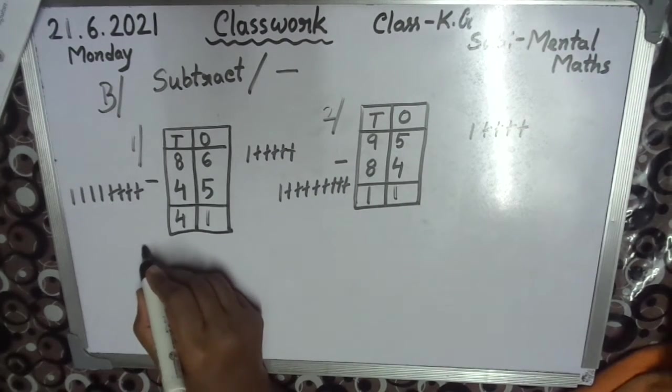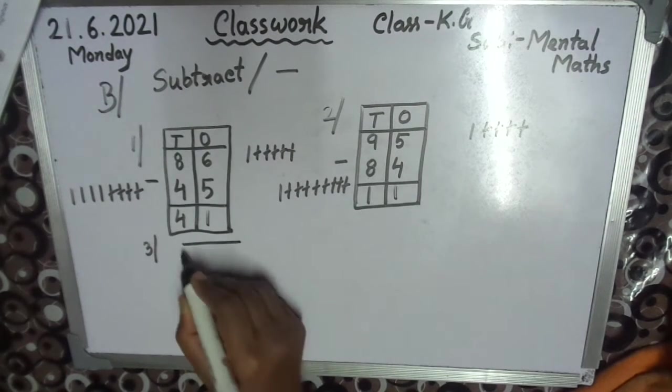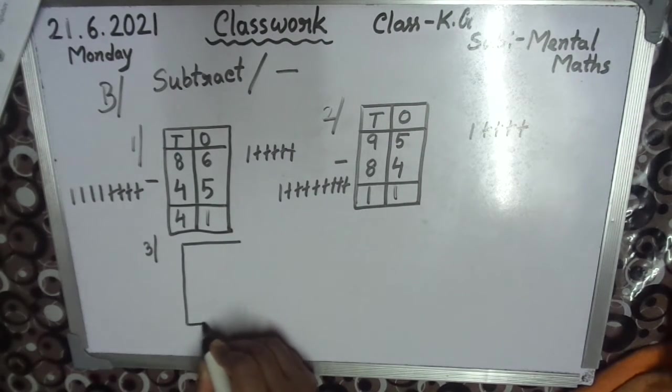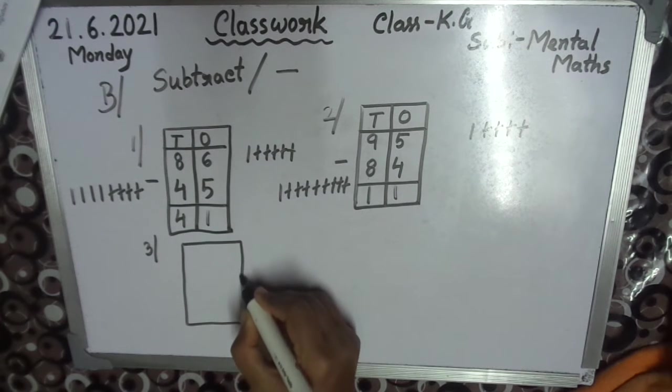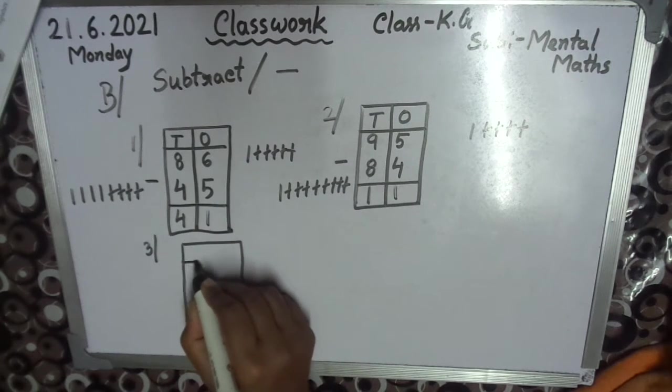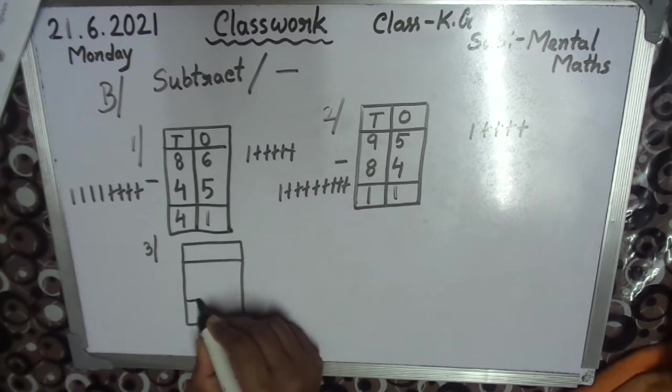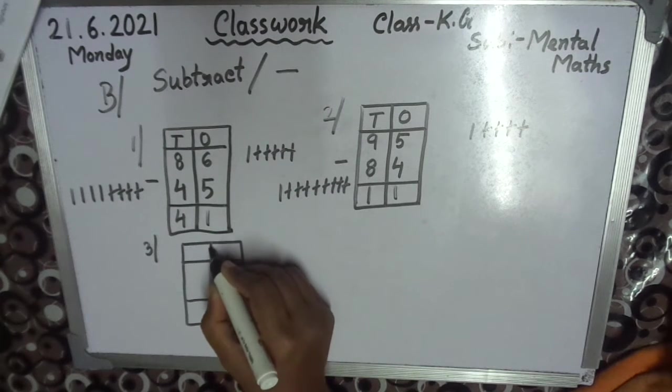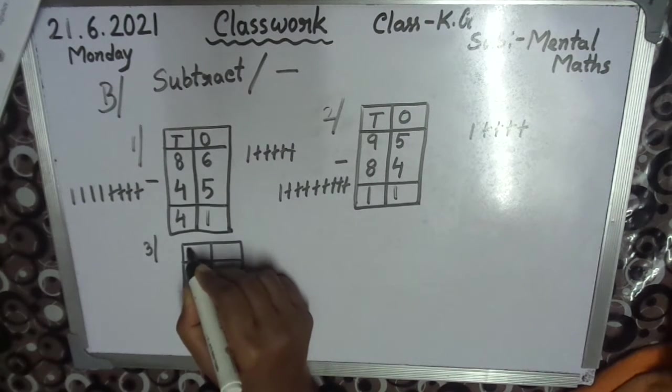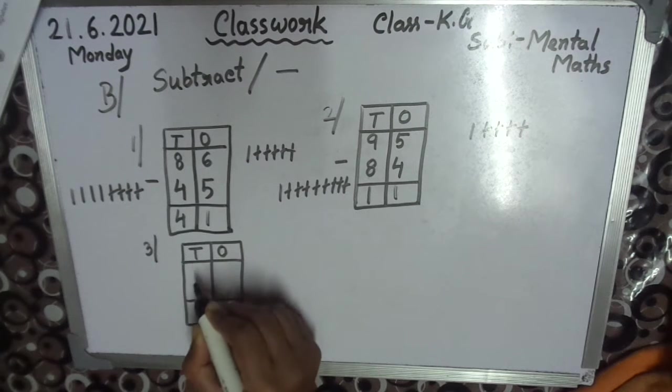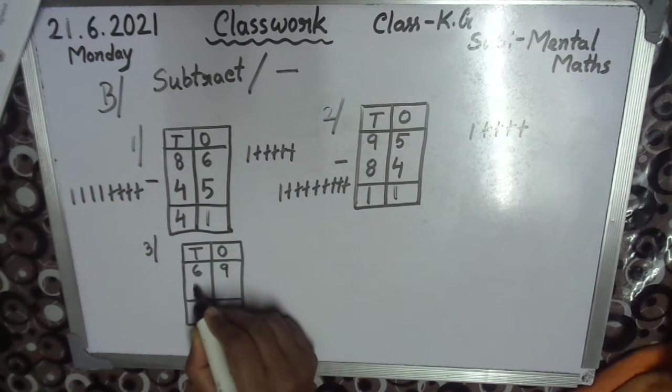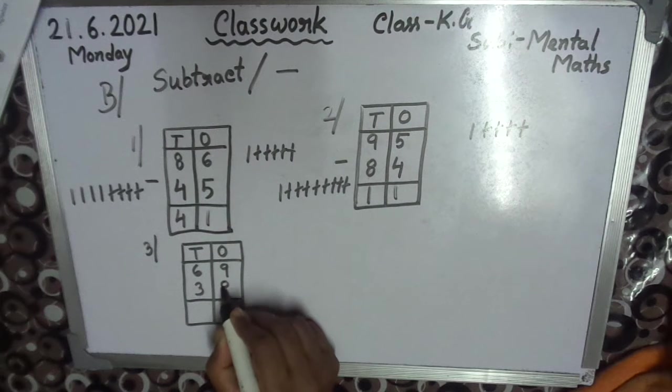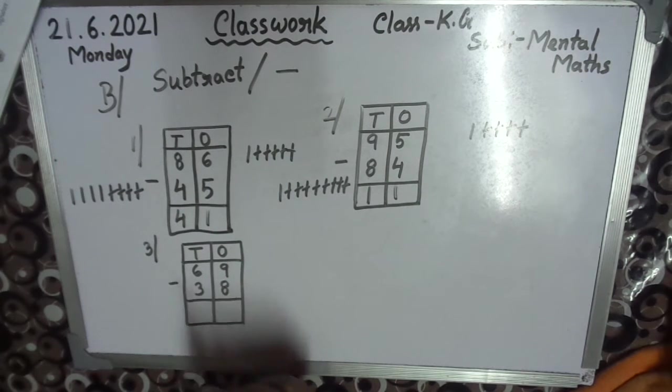Number 3. Tens, ones. 69-38. Sign minus.